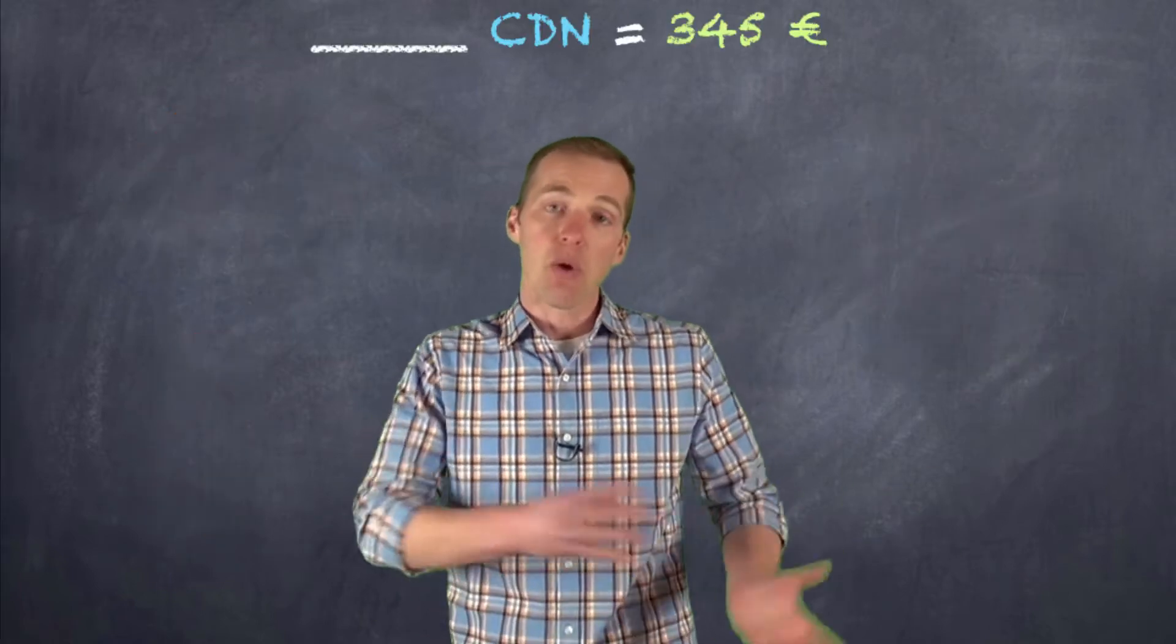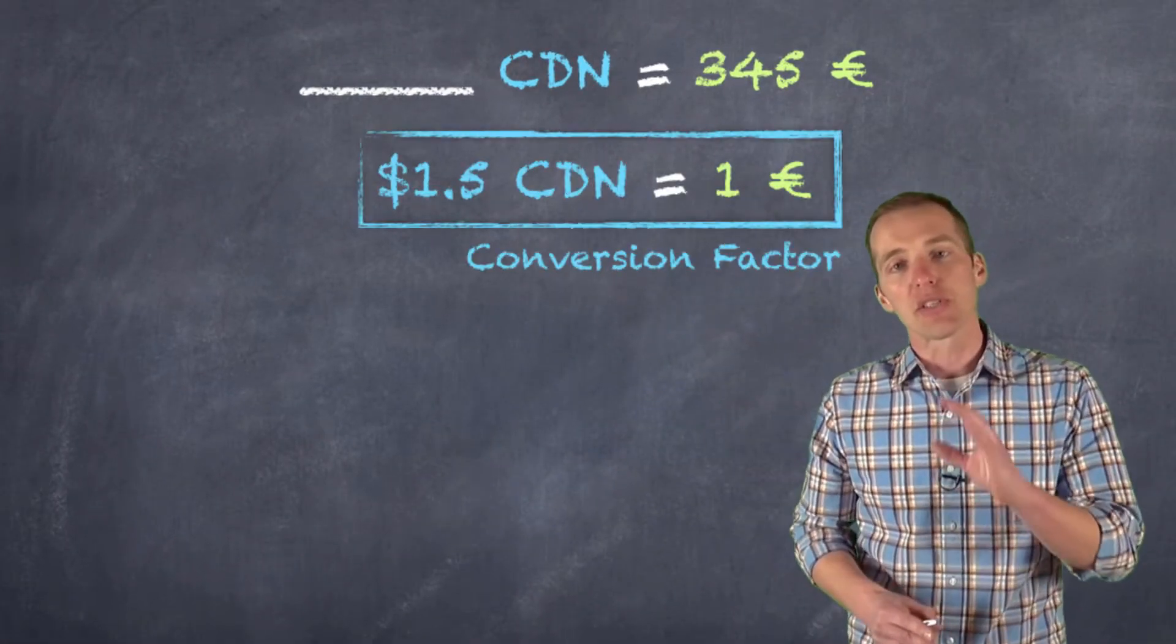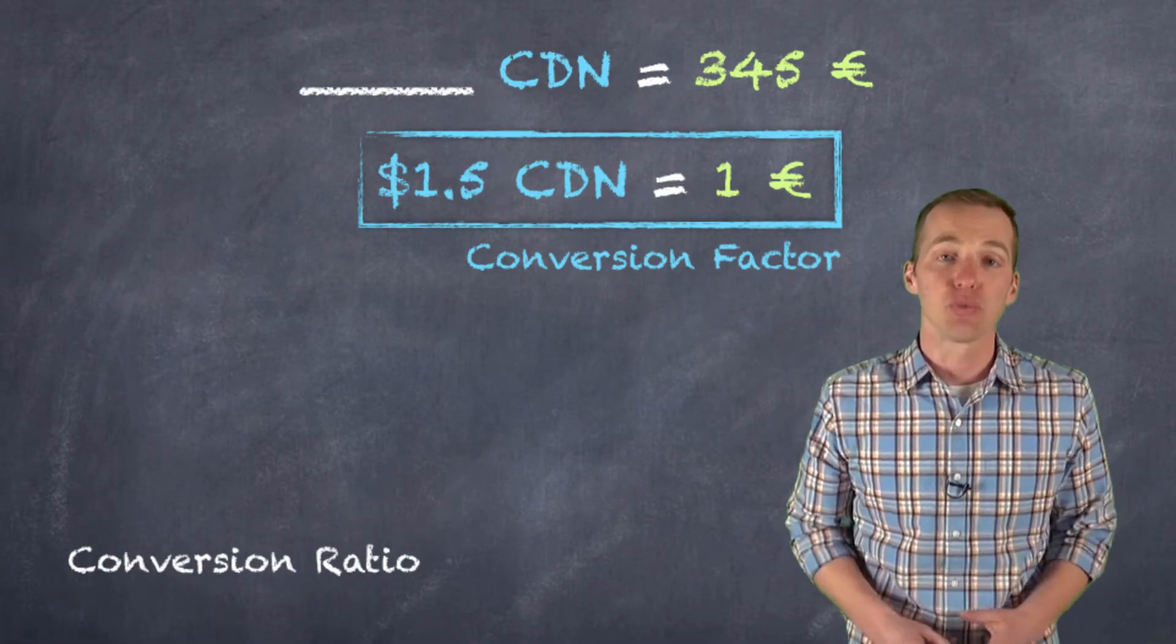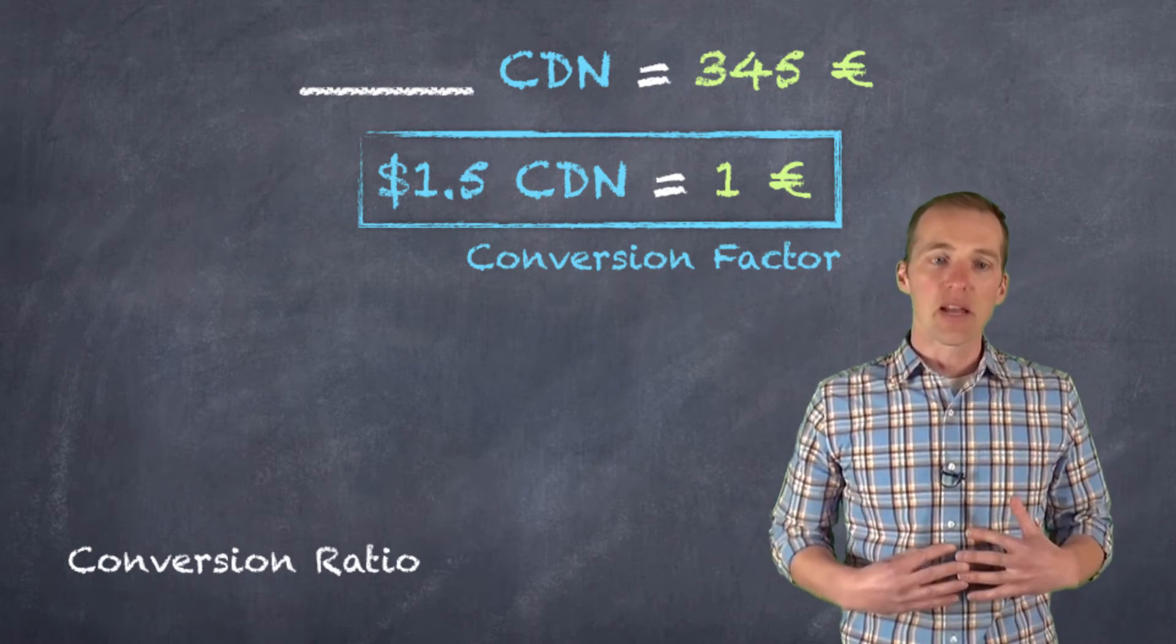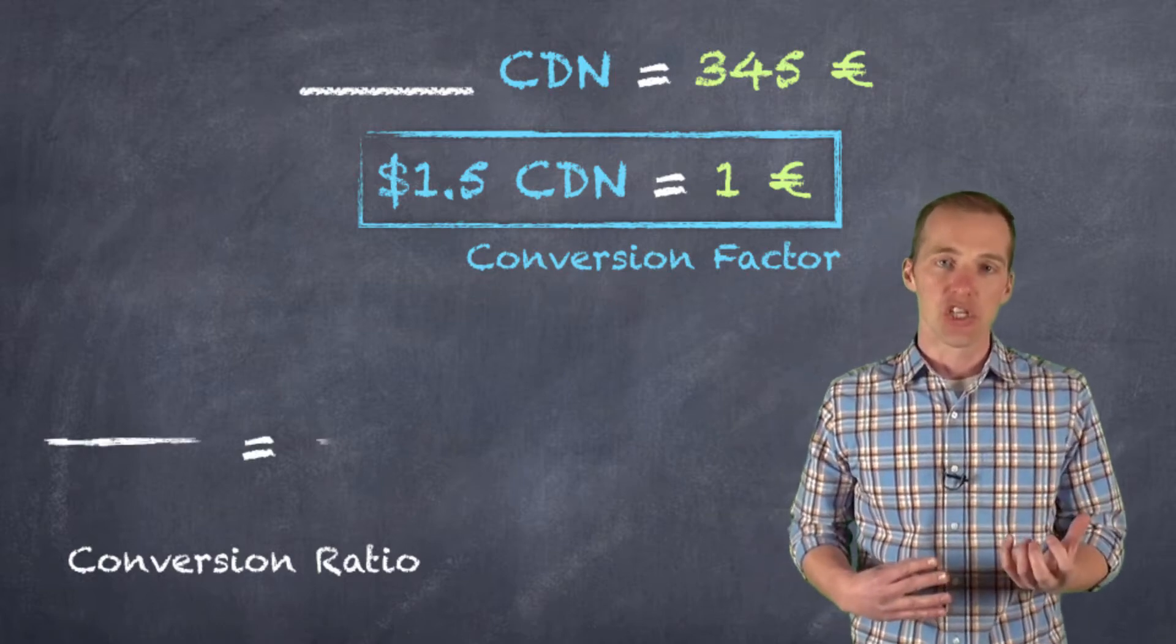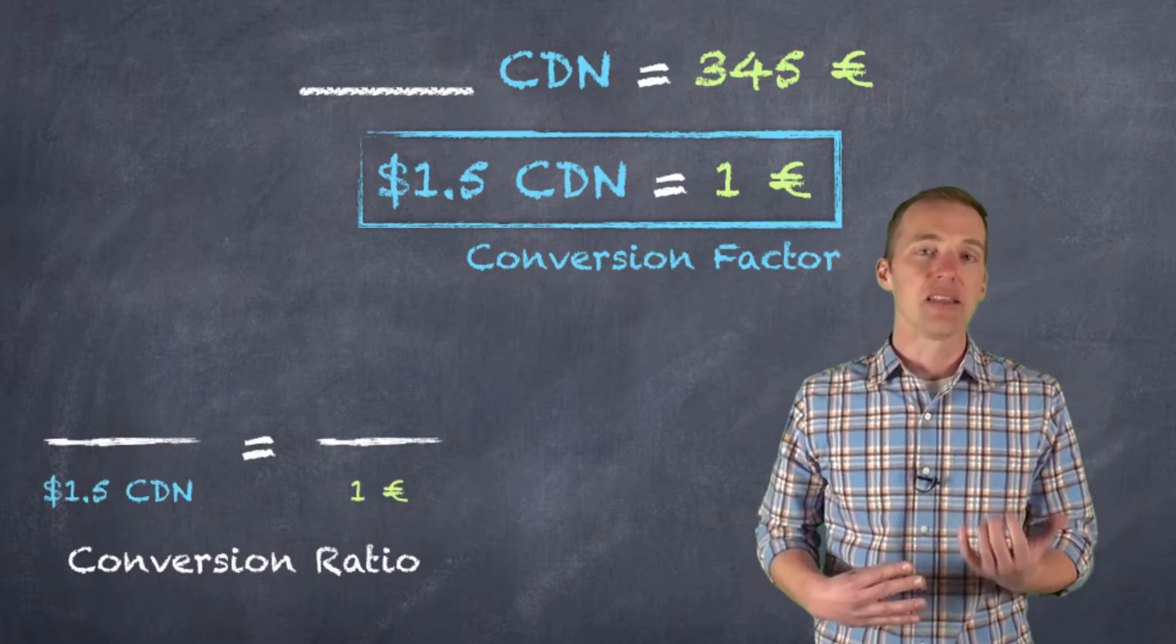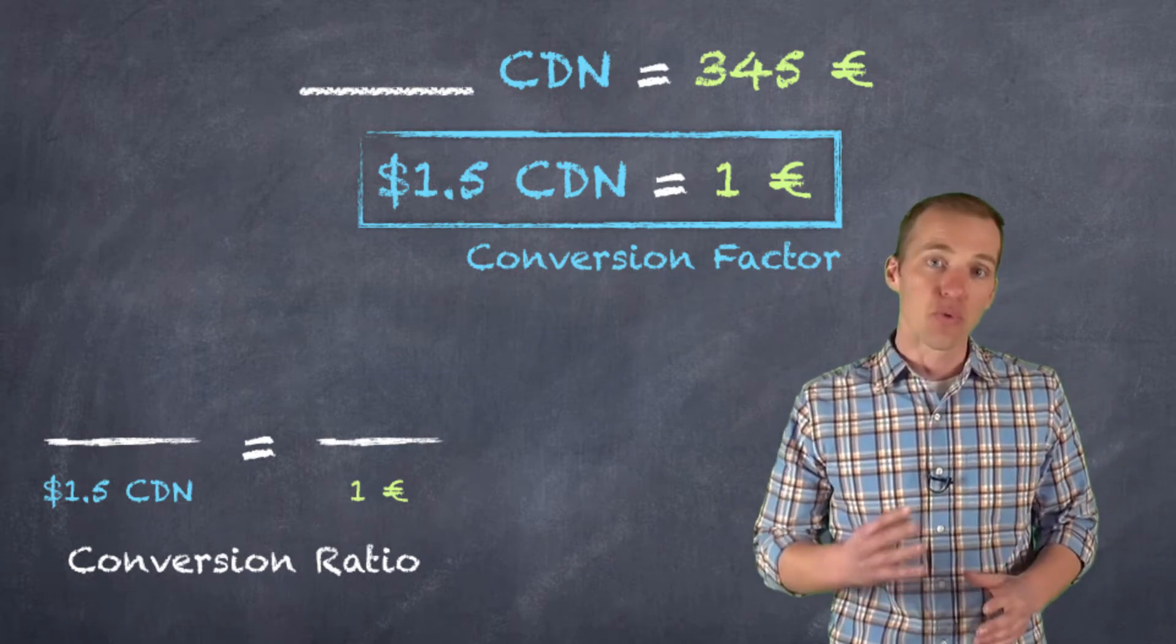So let's say I travel to Europe and I'm coming back and I've managed to keep three hundred and forty-five euros and I want to convert this into Canadian dollars. I would use this conversion factor and a conversion ratio in order to figure that out. So the way that I'm going to set up my conversion ratio is I'm going to put my known relationship, that is my conversion factor in the denominator. So I have one and a half Canadian dollars for every euro.